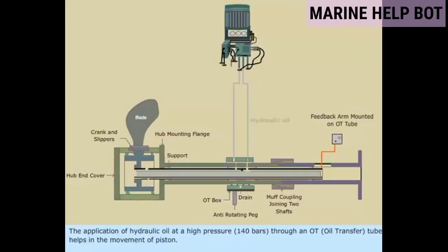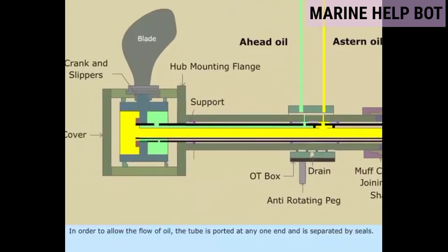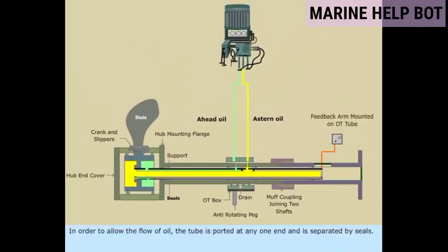The application of hydraulic oil at high pressure — 140 bars — through an OT (oil transfer) tube helps in the movement of the piston. The ahead and astern oil passes through the inner and outer pipe of the tube. In order to allow the flow of oil, the tube is ported at one end and separated by seals. Through the ports on the shaft circumference, where the OT box is mounted, the oil is sent to the tube.